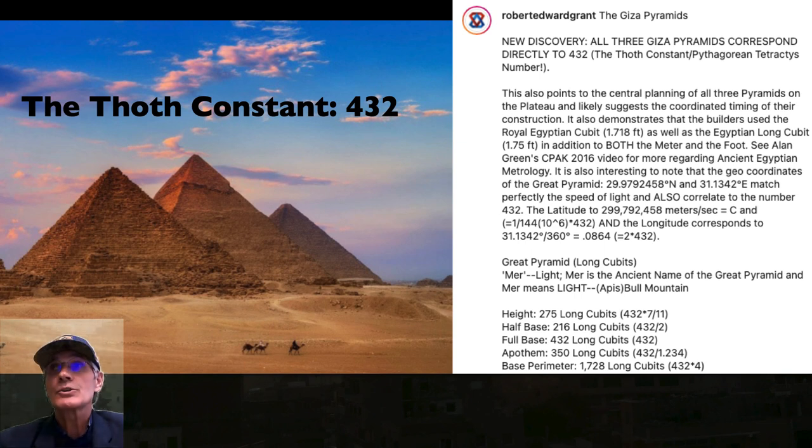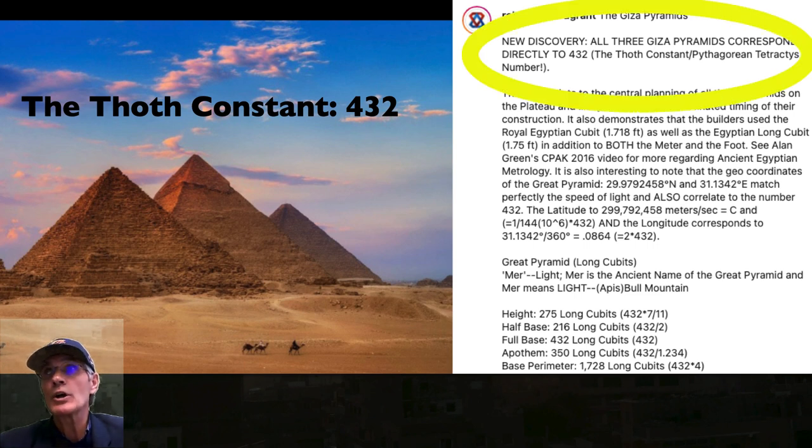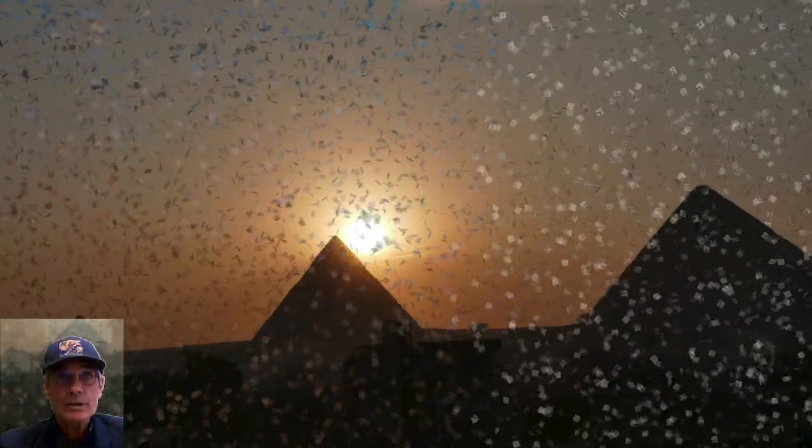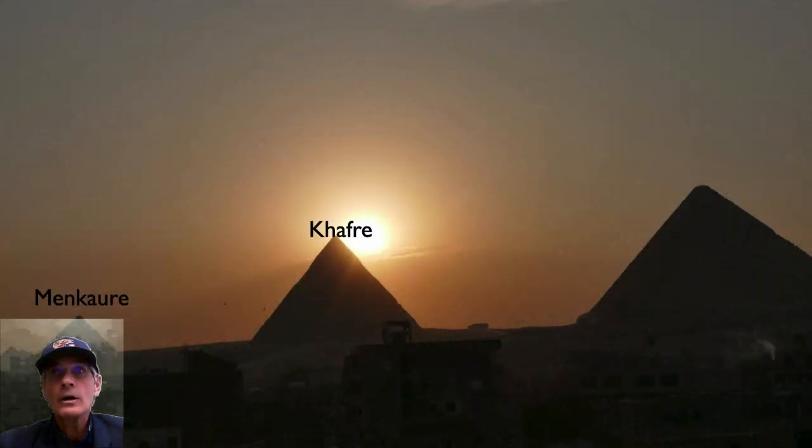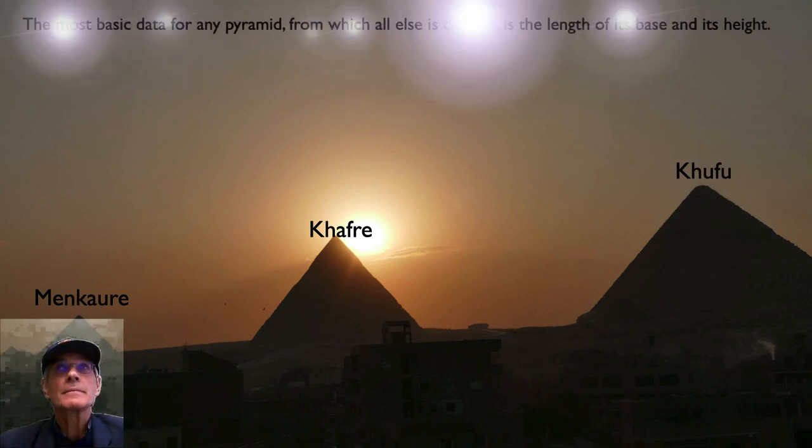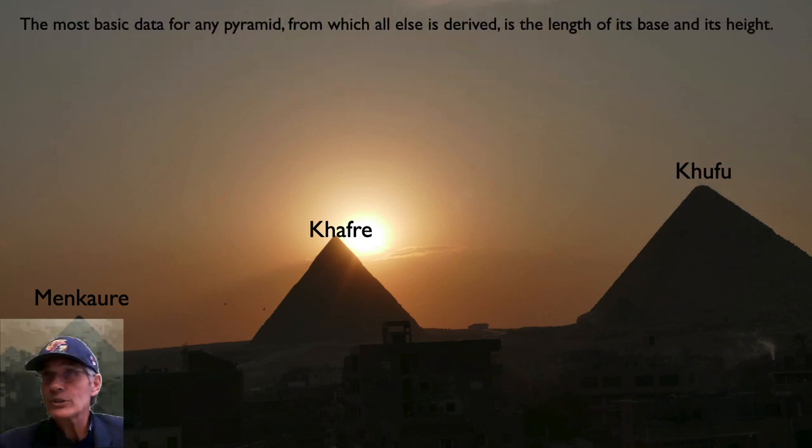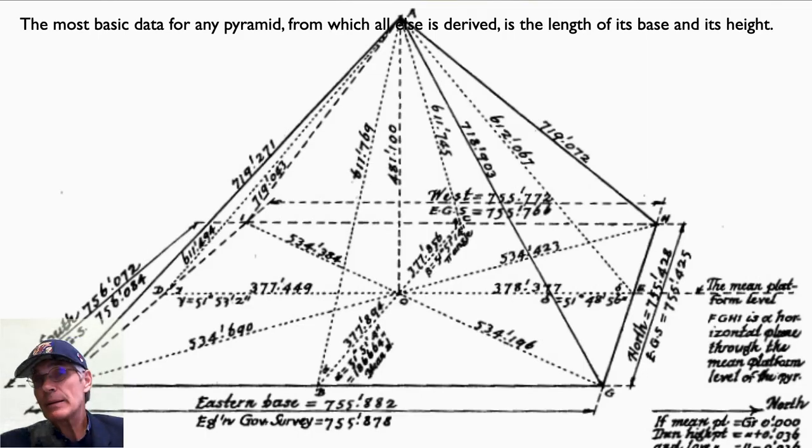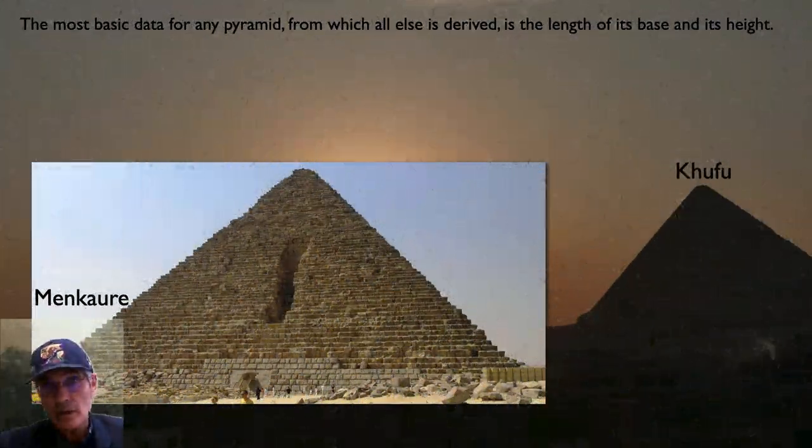So he posted this on Instagram, and this is just incredible. He names 432 the Toth constant, and notice what he says here. New discovery. All three Giza pyramids correspond directly to 432. So let's look at this. You've got Menkaure, Khafre, and Khufu. All right, so the most basic data for any pyramid from which all else derived is the length of its base and its height. So here's the famous Cole-Petrie survey. All of these measures, the diagonals, the half base, all of them, the apothem, the edge, are all derived from the base and the height.